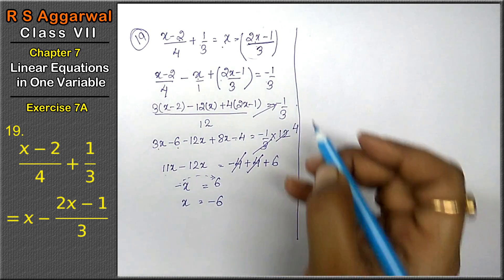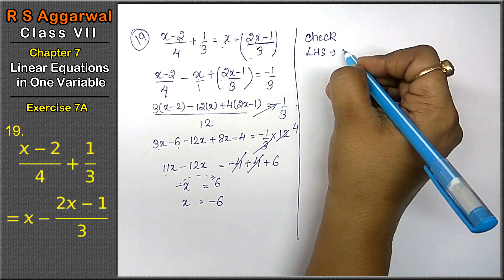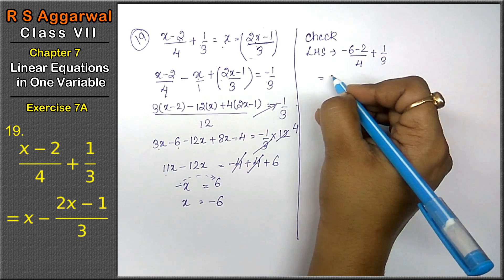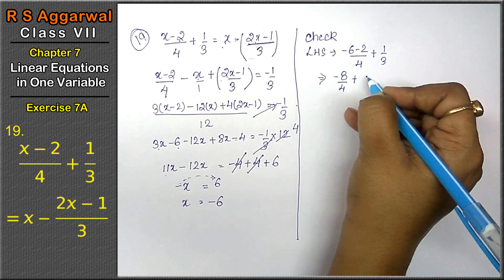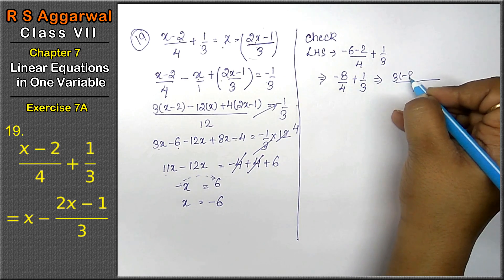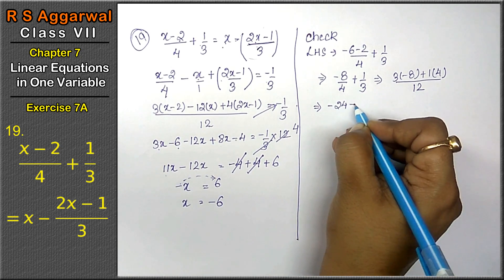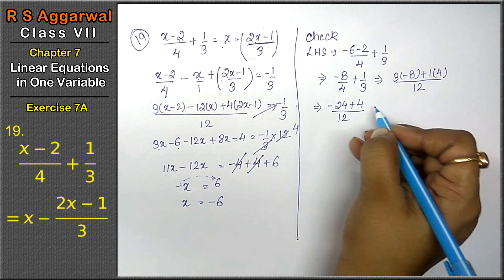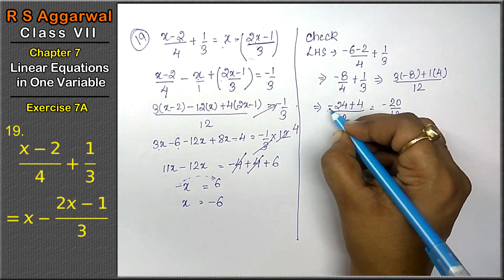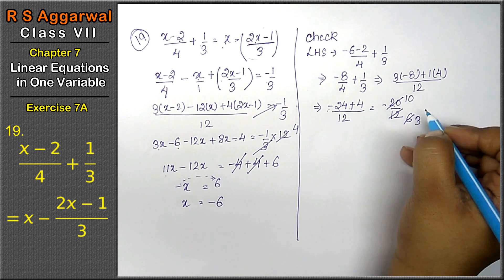Let's check. Left-hand side: (-6-2)/4 + 1/3 = -8/4 + 1/3. Taking LCM 12: 3 times -8 plus 4 times 1 = -24 + 4 upon 12 = -20/12.